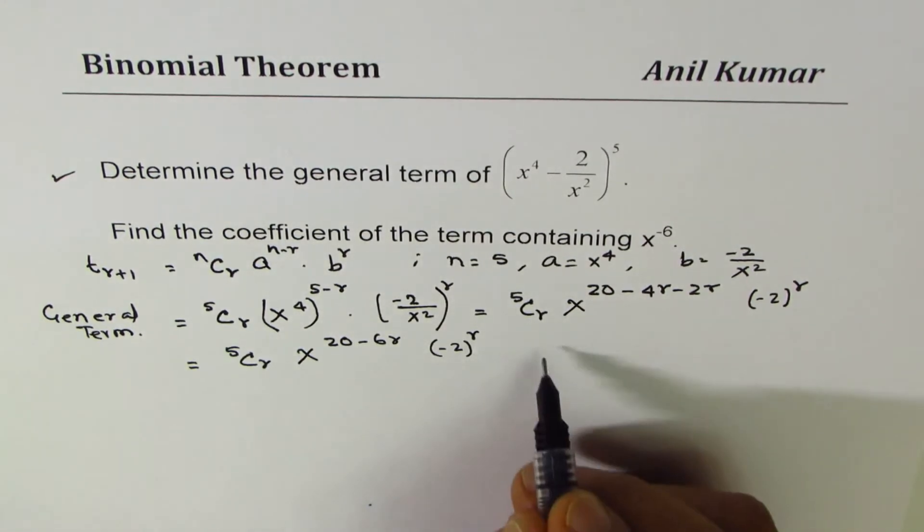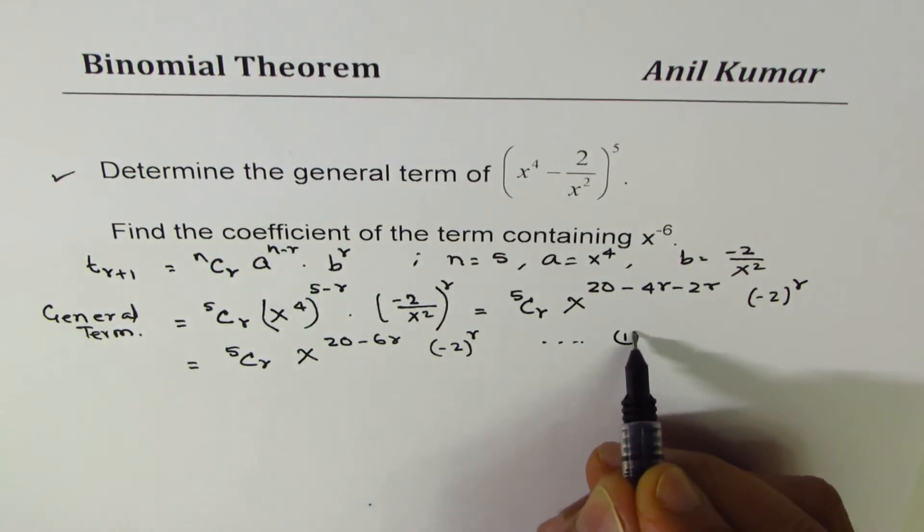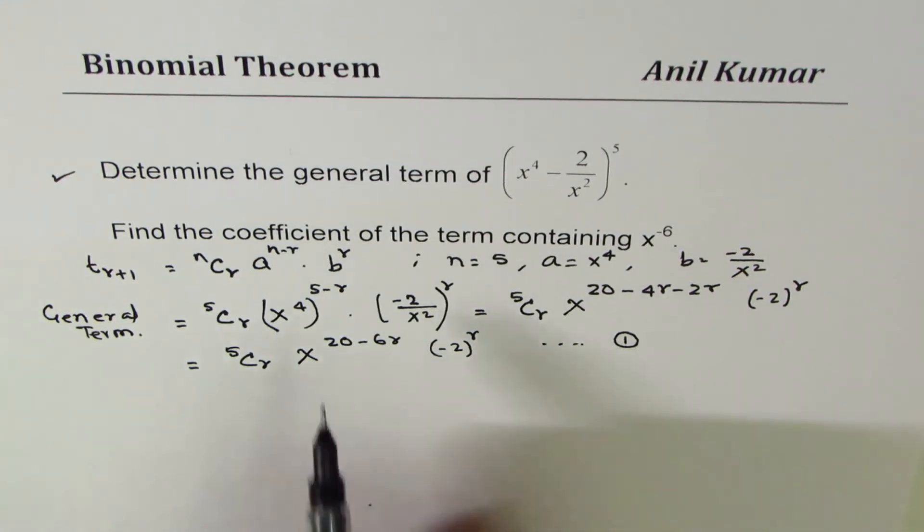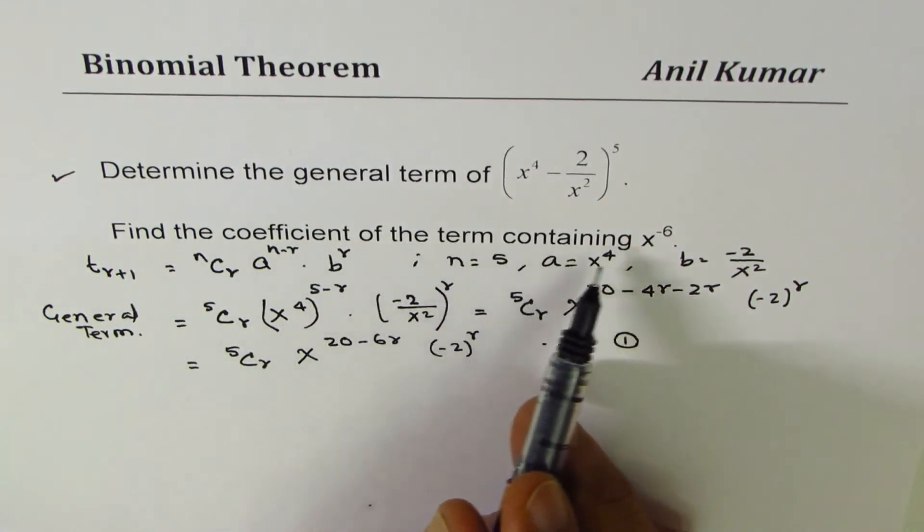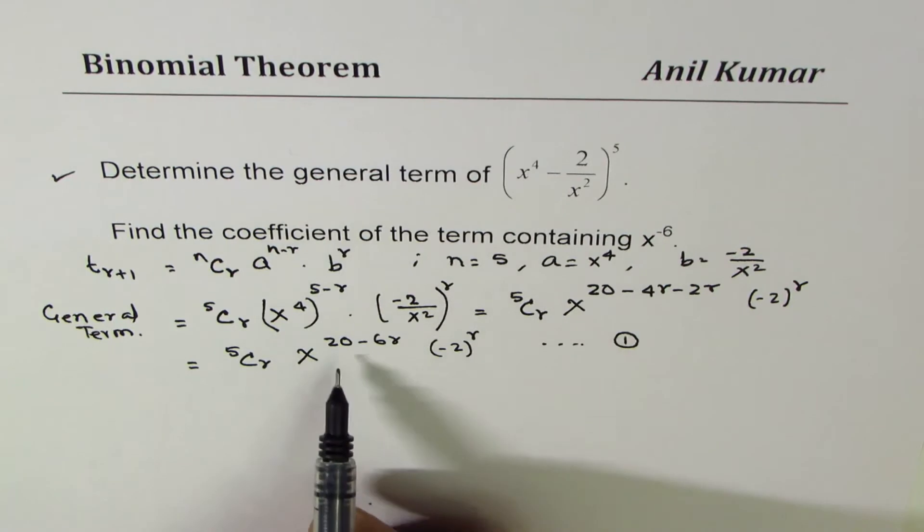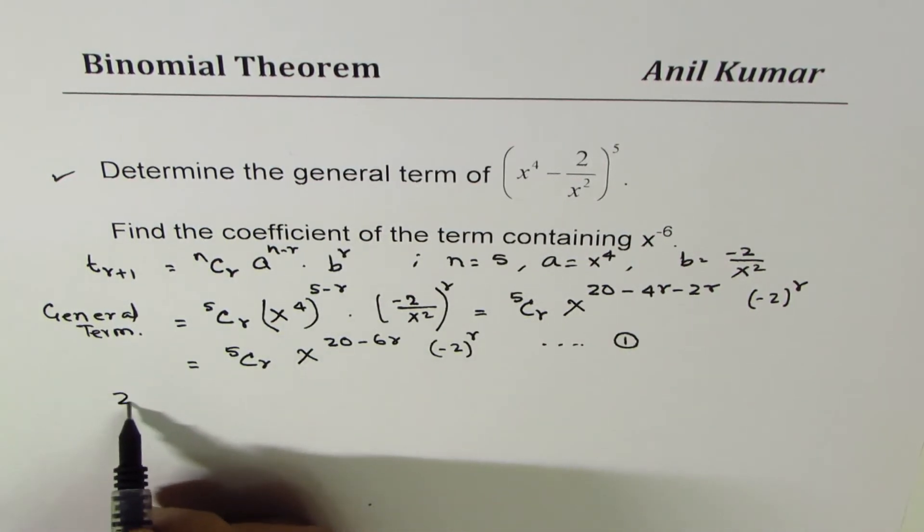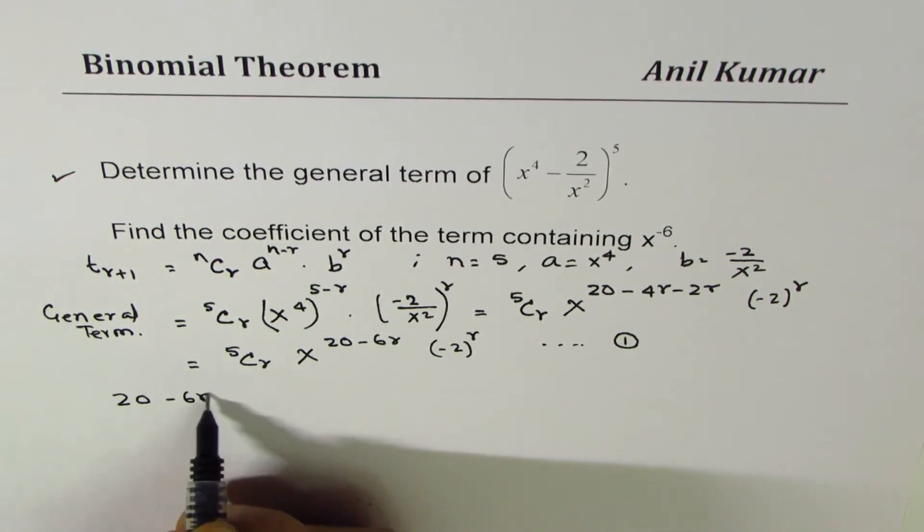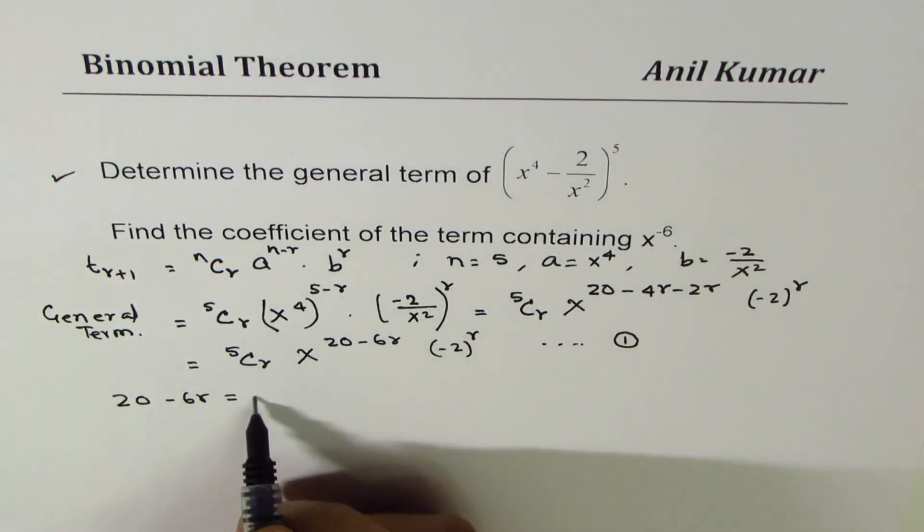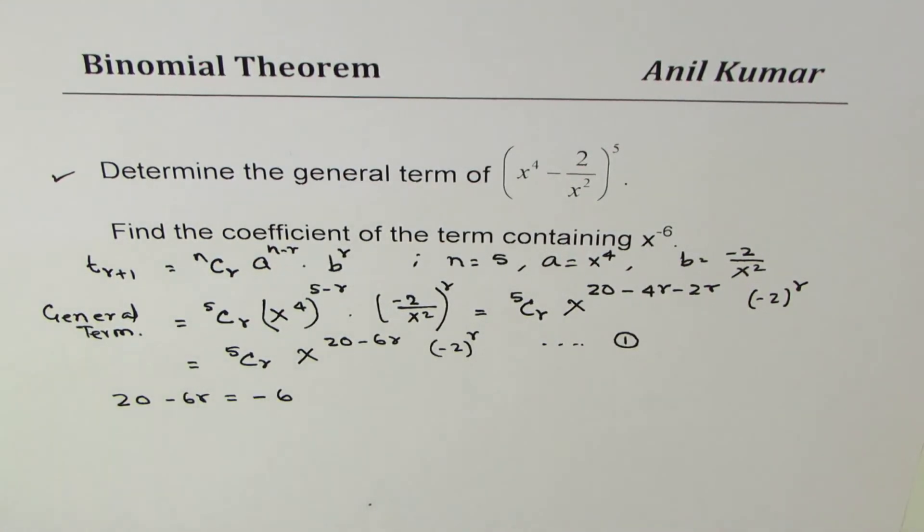This is a better general term, so let me say this is my answer for part 1. Second is: find the coefficient of the term with x^(-6). That means we'll equate 20 - 6r to -6 and find the value of r.